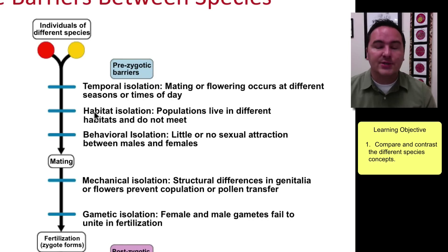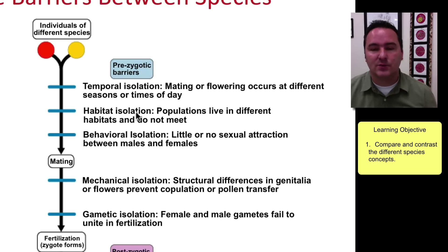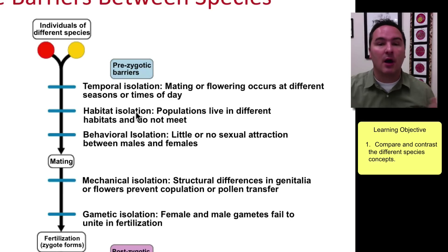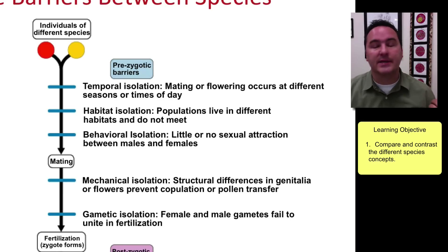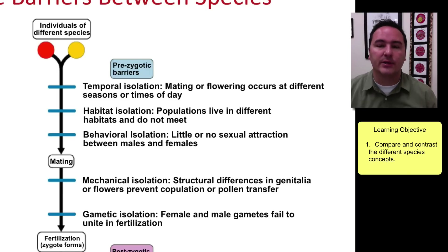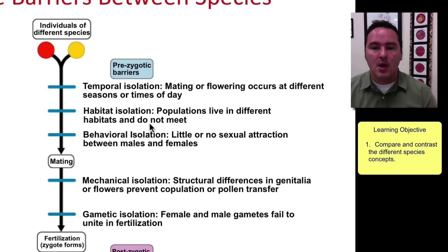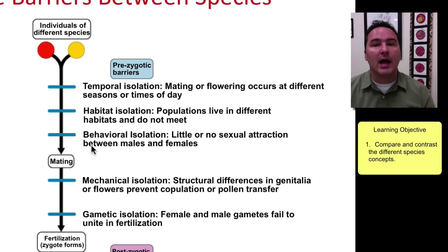Likewise, you could have habitat isolation, where two flowers are on different continents. Even if they are flowering at the exact same time, if they are in different areas they are not going to be able to reproduce. There is also the issue of behavioral isolation.